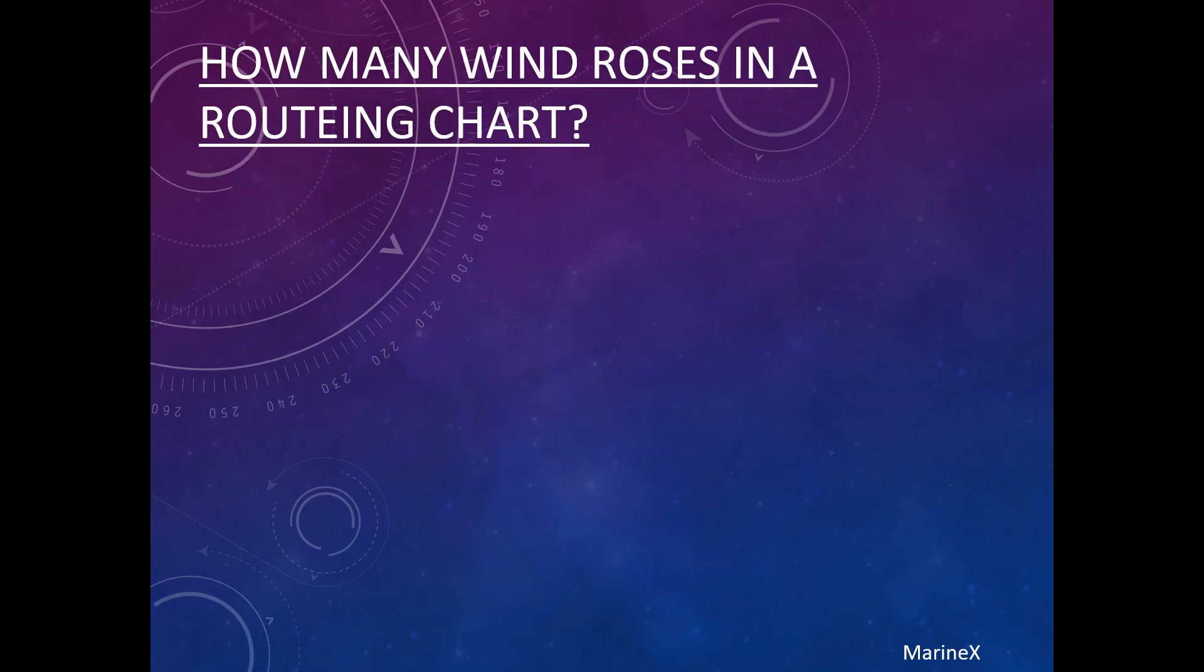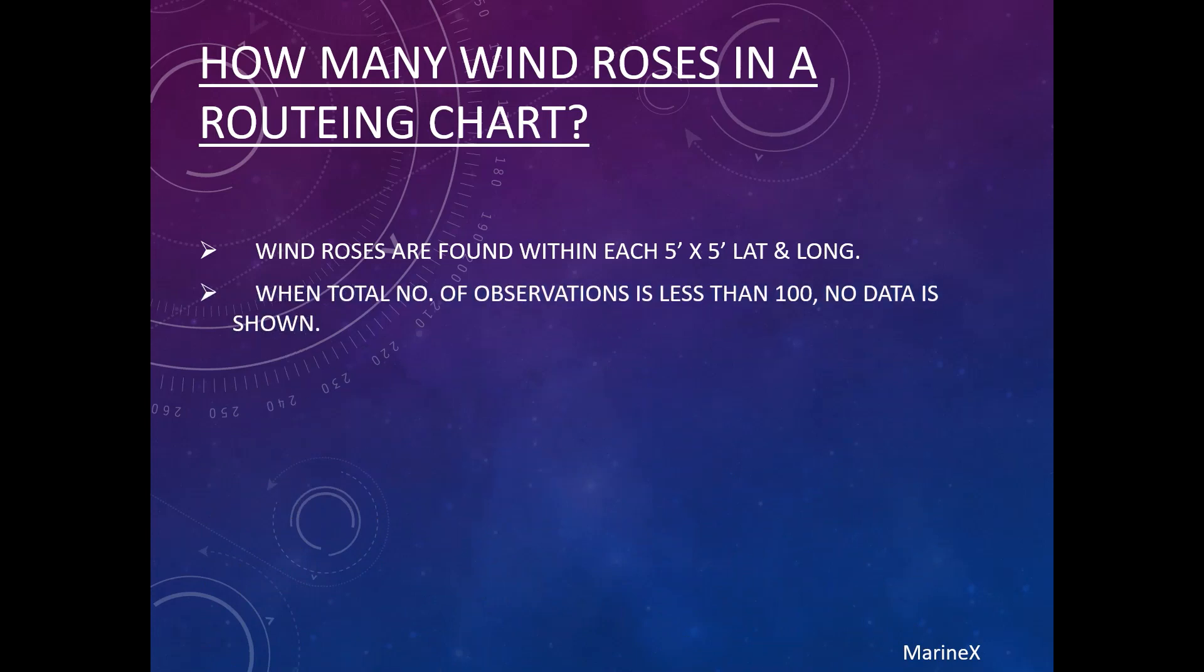So this question is mostly asked by the surveyors that how many wind roses in a routing chart. So it's quite simple. Wind roses are found within each 5 degree by 5 degree latitude and longitude. When total number of observation is less than 100, no data is shown.